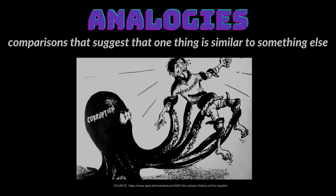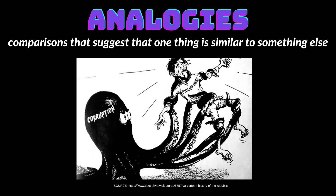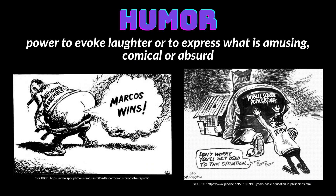Fourth are analogies — these are comparisons that suggest that one thing is similar to something else, though the two are unlike things. In this example, corruption is represented by an octopus. Last is humor — this is the power to evoke laughter or to express what is amusing, comical, or absurd.